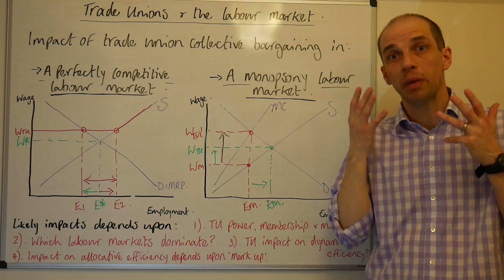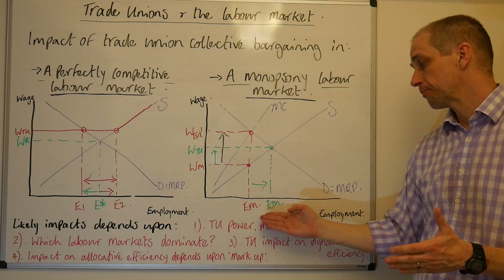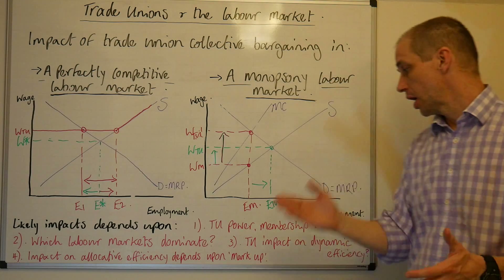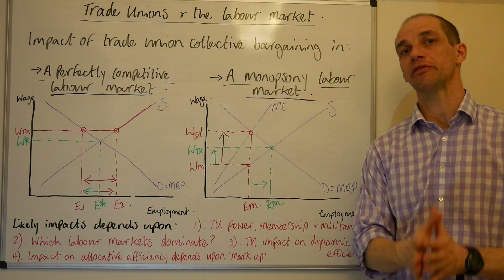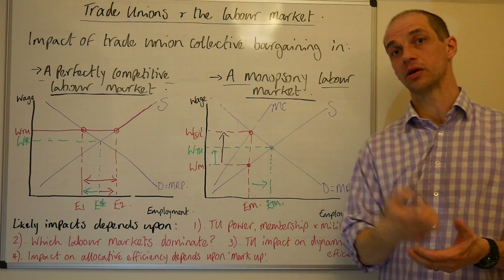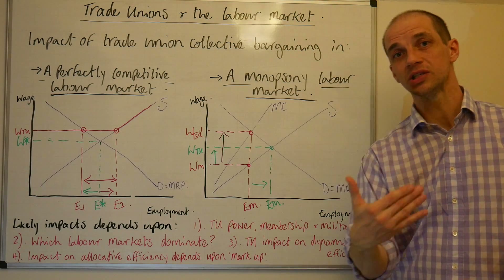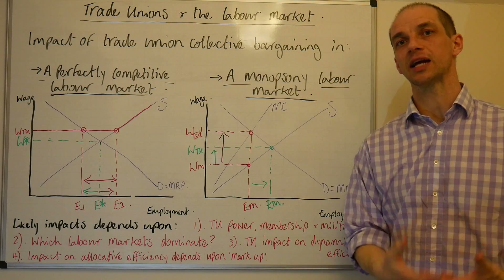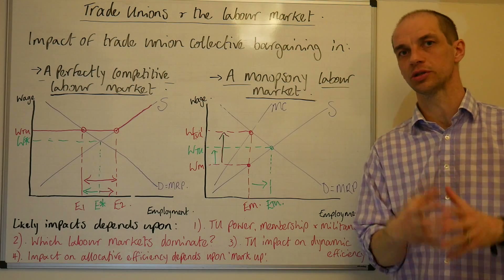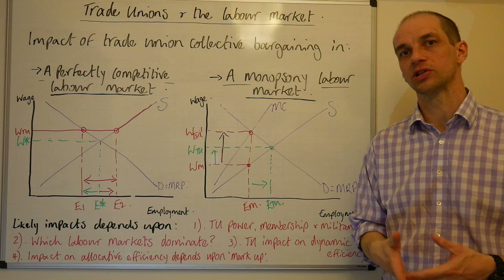Firstly, we need to consider how powerful the trade union really is — the more power they have, the greater their negotiating skills. What about the extent of membership? If they don't have every worker on board, it's going to be more difficult to negotiate those higher wages. What about the level of militancy? The more militant they are — the more willing to pursue strike action, overtime bans, or work to rule where they just fulfil their job descriptions and nothing else — the more likely they are to actually get their way.